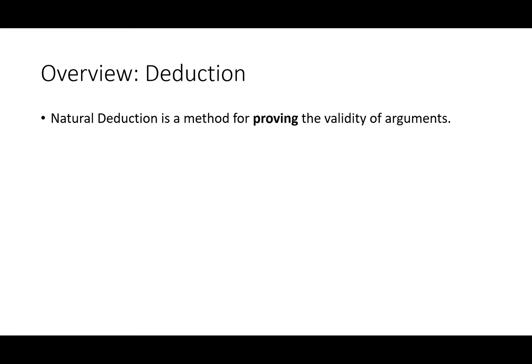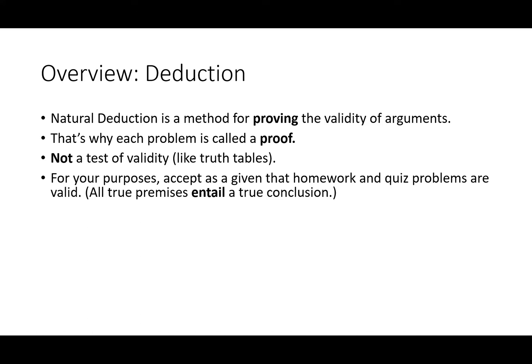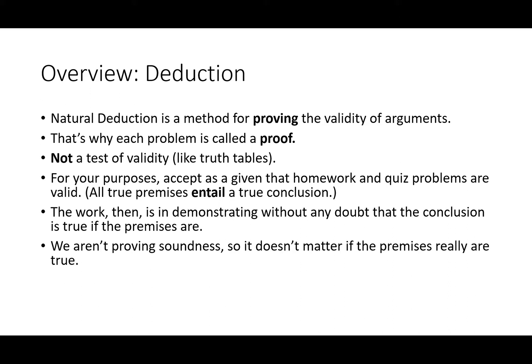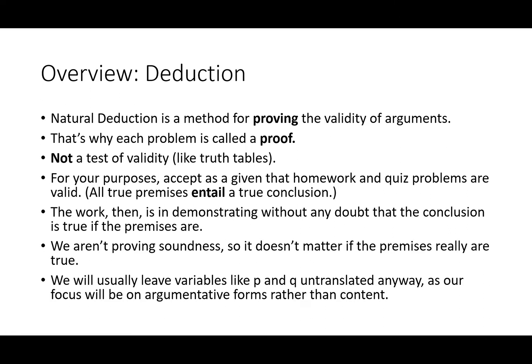Let's look at the deduction half. Natural deduction is a method for proving the validity of arguments. That's why each problem is called a proof. It's not a test of validity like truth tables are. You can never show that an argument is invalid with this method. For your purposes, accept as a given that homework and quiz problems are valid. That is to say all true premises entail a true conclusion. The work then is in demonstrating without any doubt that the conclusion is true if the premises are. We aren't proving soundness so it doesn't matter if the premises are really true and we're usually going to leave our variables like p and q untranslated so there won't be any question of soundness.